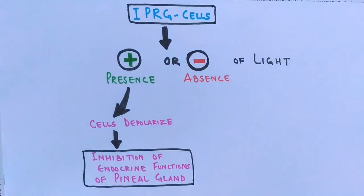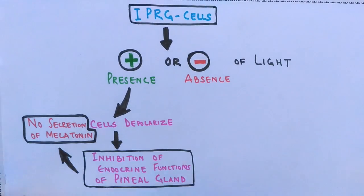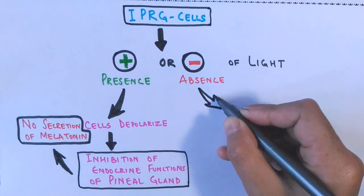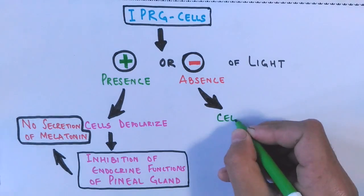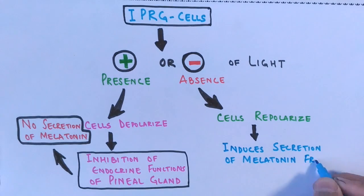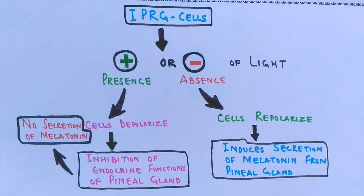When ipRGCs depolarize in the presence of light, there is inhibition of the endocrine functions of the pineal gland — meaning no melatonin hormone is secreted. On the other hand, in the absence of light — at night — these cells repolarize, which induces the secretion of melatonin from the pineal gland.